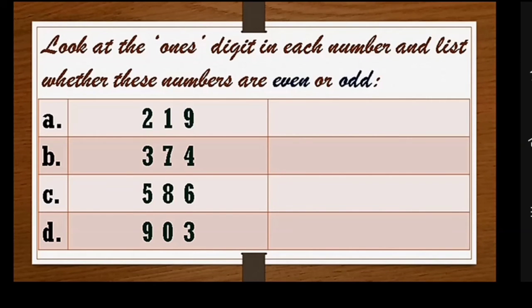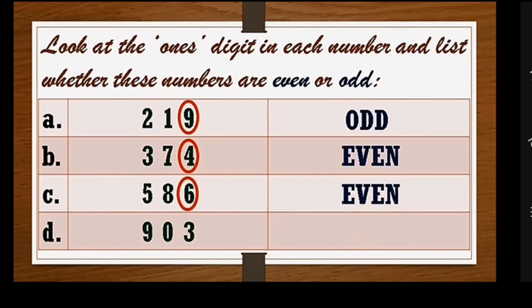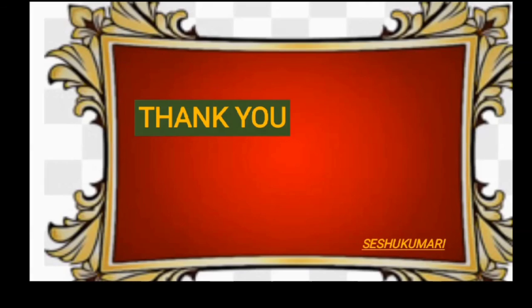Look at the ones digit in each number and list whether these numbers are even or odd. What is the ones digit number? Nine is an odd number. Four is an even number. Six is an even number. And three is an odd number. Children, I hope you understood. Thank you!